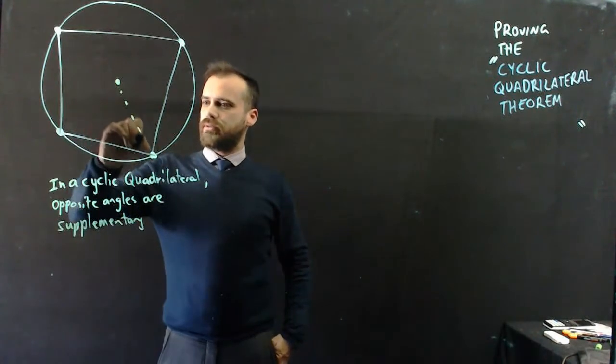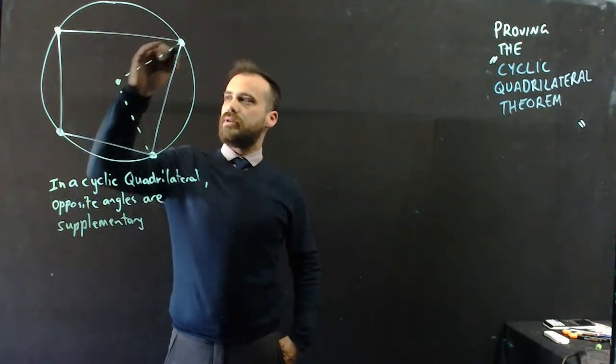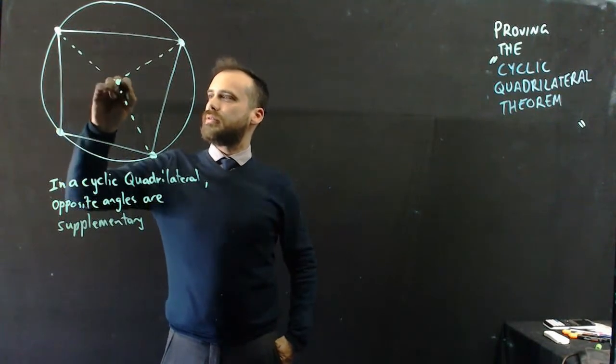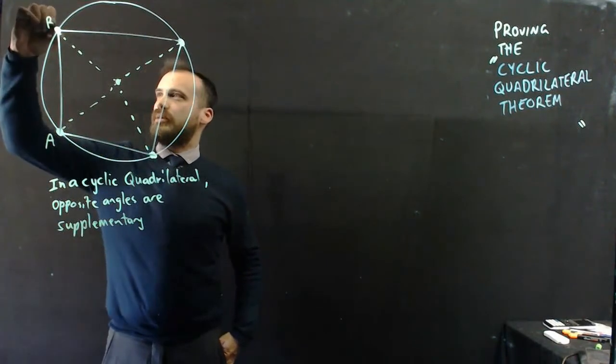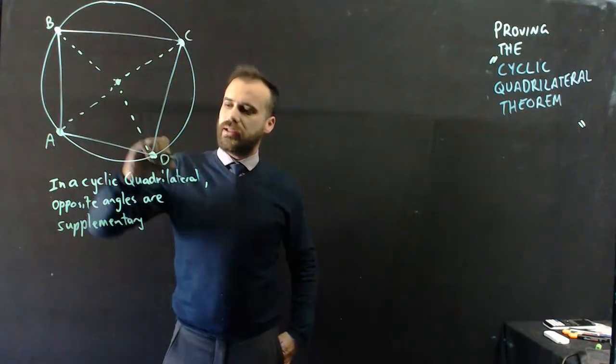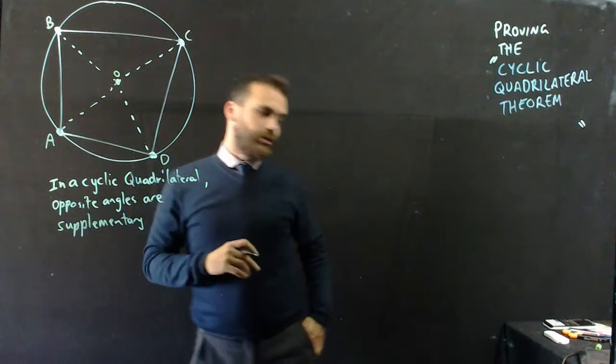A radius, a radius, a radius, and a radius. Let's call that A, let's call that B, let's call that C, let's call that D, and let's call that the origin.